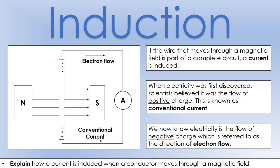If we now connect this wire into a complete circuit — still moving the wire down into the page but now connected with an ammeter (probably a milliammeter in reality) — instead of just inducing an EMF we're also going to induce a current, because the negative charge will move to the positive region.